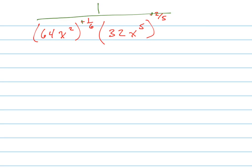So I would start by doing that and then just distribute this into both of them. So 64 to the 1/6, we'll talk about how to simplify that in a second.